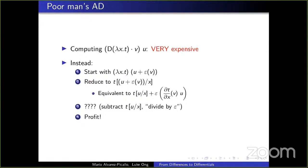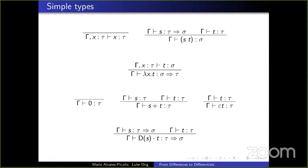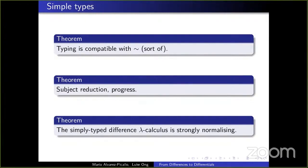The calculus as presented does not feature subtraction or cancellation of epsilons, as those features are hard to integrate into a lambda calculus, but on a practical level this is more or less trivial. One can make the difference lambda calculus simply typed, with typing well-behaved with respect to the algebraic equivalence, yielding subject reduction, progress, and strong normalization — the proof being more or less identical to the corresponding one for the differential lambda calculus.